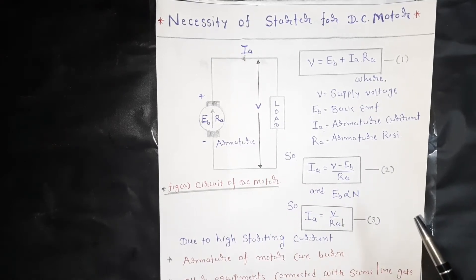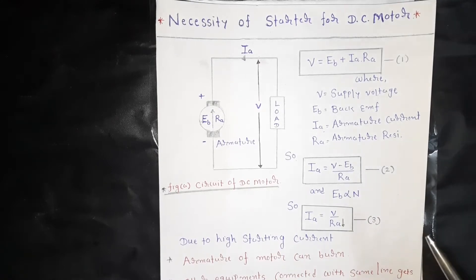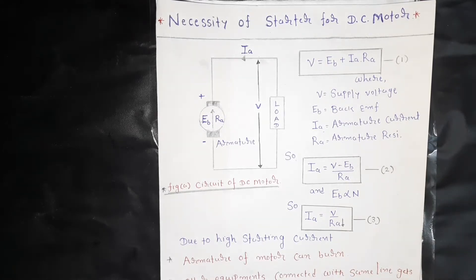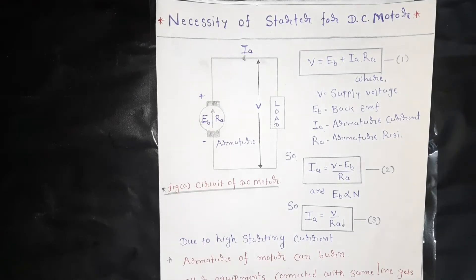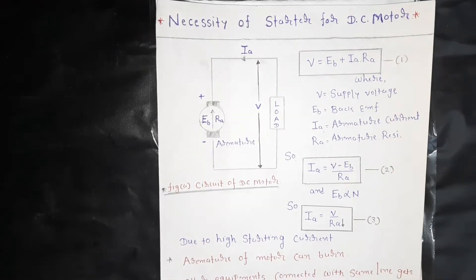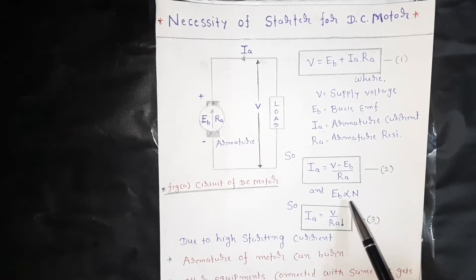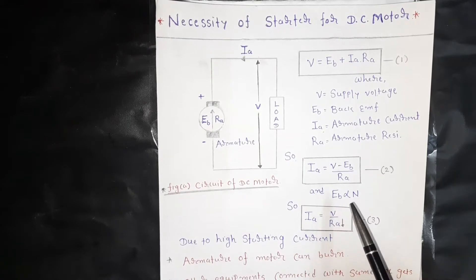All DC motors are self-starting. So when the motor is connected with the DC supply, it will start to rotate. The function of the starter is not to start the motor at all. At the time of starting, the speed of the motor is zero. Hence, if the speed is zero, there will be no back EMF in the motor. So back EMF is also zero at starting.